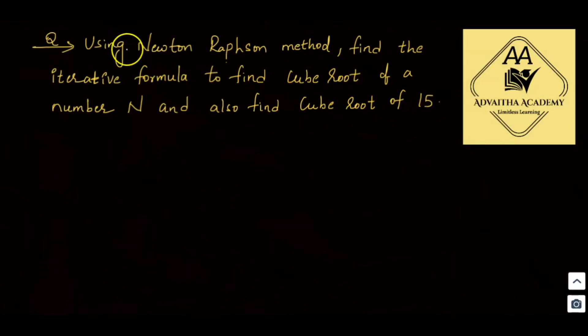The question is: using the Newton-Raphson method, find the iterative formula to find the cube root of a number, and also find the cube root of 1500.